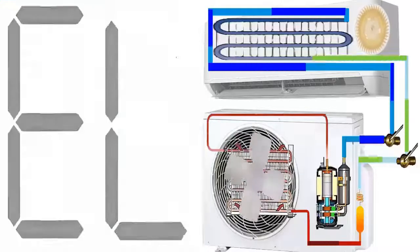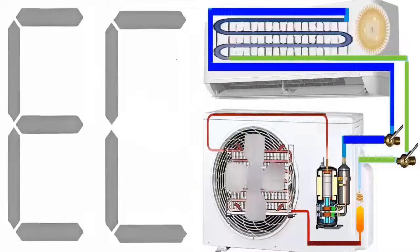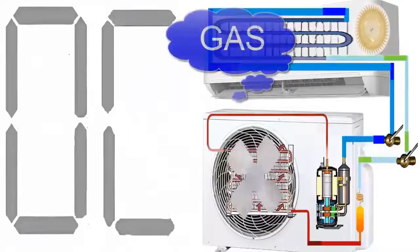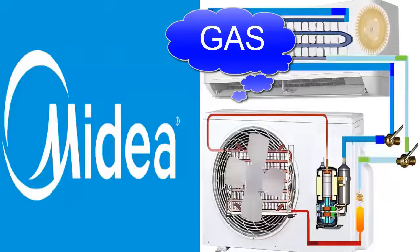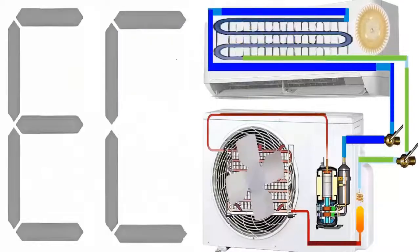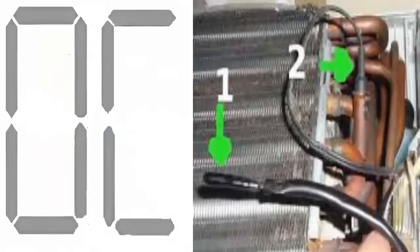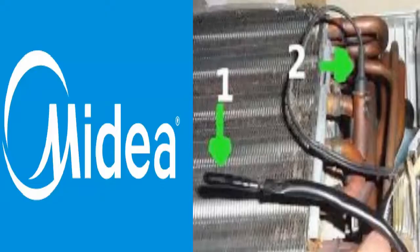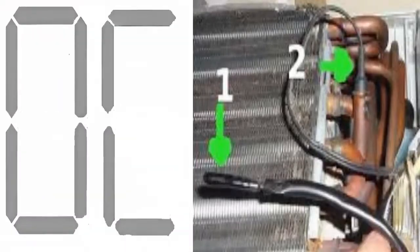The error code EL0C or EC in Midea air conditioners is activated when the system, through its control strategy, detects a possible refrigerant gas leak. However, this code can also be triggered by other factors. For many Midea models, the control strategy for detecting a refrigerant gas leak is based on comparing the values recorded by the temperature sensors, especially the sensor located on the coil of the indoor unit.